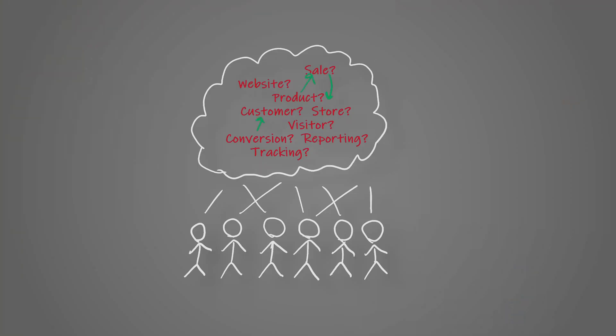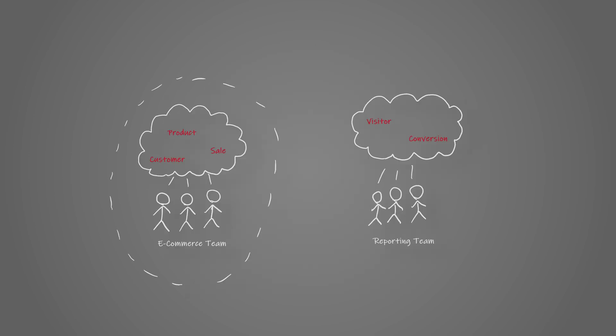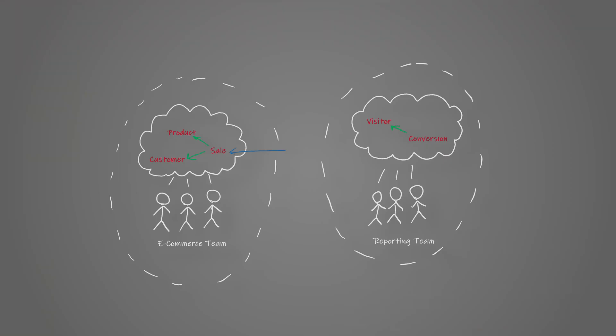Domain-driven design, at its core, has the concept that you're going to look at the problems that your organization solves and break those up into bounded contexts. Those bounded contexts are the idea that you can take the problem space the entire company is working on and break them up into smaller ones. Each of those small contexts can have its own domain model, its own language, and its own way of thinking about its problems. Within that particular problem space, you can come up with a common language for talking about the problem, and then in between each of those bounded contexts, you can put a pretty hard boundary and translate from your concept of a particular problem to somebody else's concept. This is called context mapping.